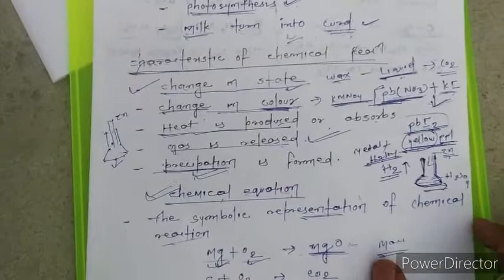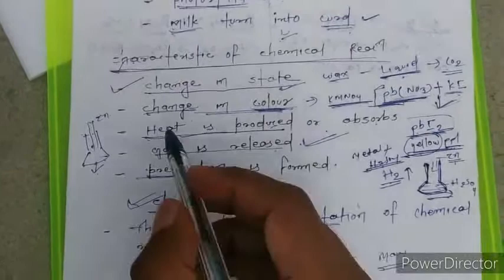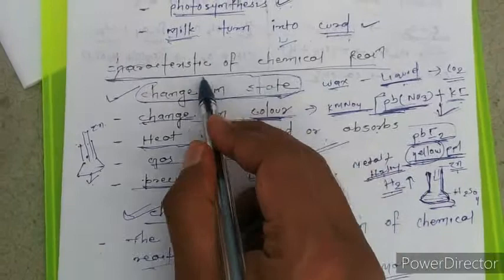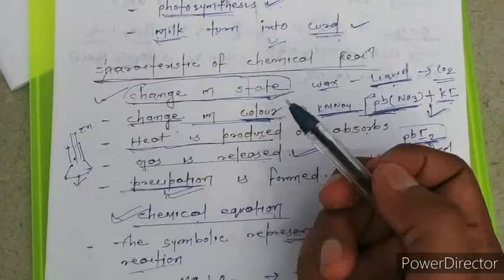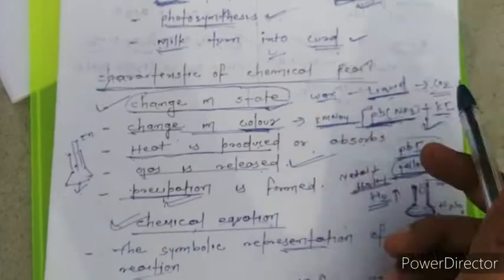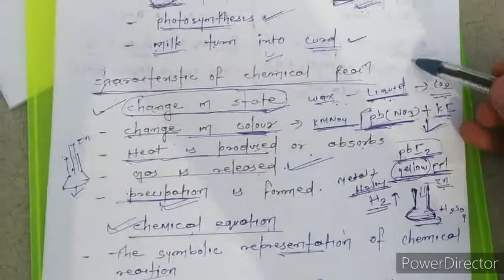If we talk about the characteristics of chemical reaction, in some chemical reactions the physical state may change. The physical states are solid, liquid, and gaseous — these can change. For example, take a candle made of wax: it will first convert into the liquid state and then it converts into carbon dioxide.